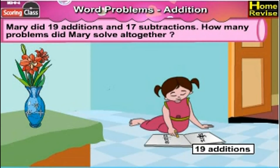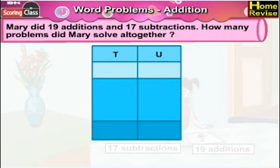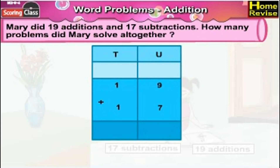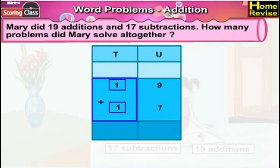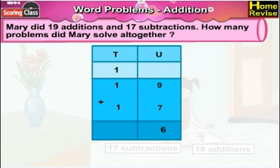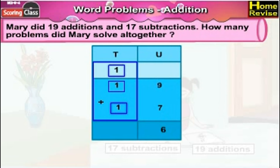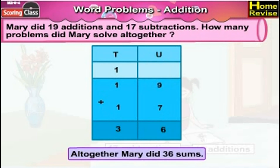Mary did 19 additions and 17 subtractions. How many problems did Mary solve altogether? Mary did 19 additions and 17 subtractions. Under units we have 9 units plus 7 units, and under tens we have 1 ten plus 1 ten. 9 units plus 7 units is 16 units — write 6 in the units and carry forward 1 in the tens. 1 ten plus 1 ten plus 1 ten is 3 tens. So it is 3 tens plus 6 units, which means 19 plus 17 is 36 sums. Altogether Mary did 36 sums.